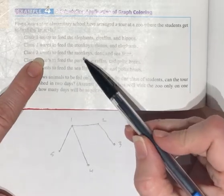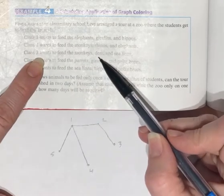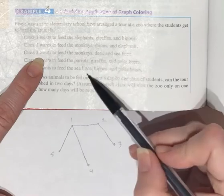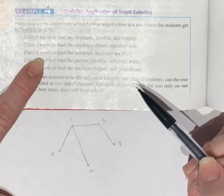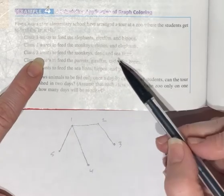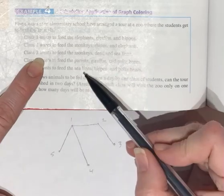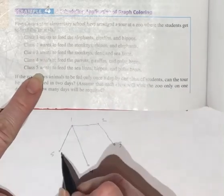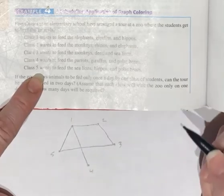Alright. So class three. Monkeys. I already have that one. Deer. Nobody else wants to feed the deer. And sea lions. Class five wants to feed the sea lions. So class three and five have a conflict.